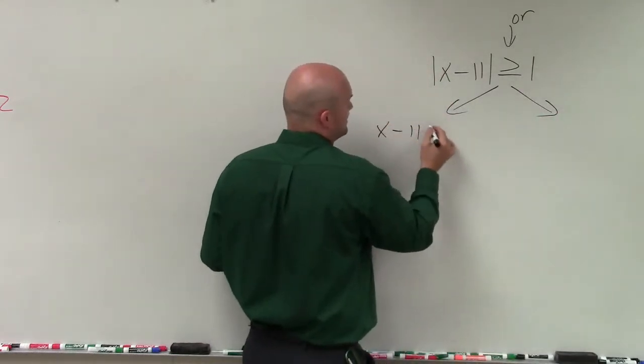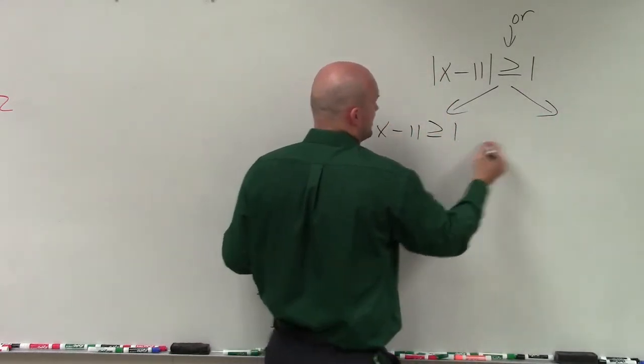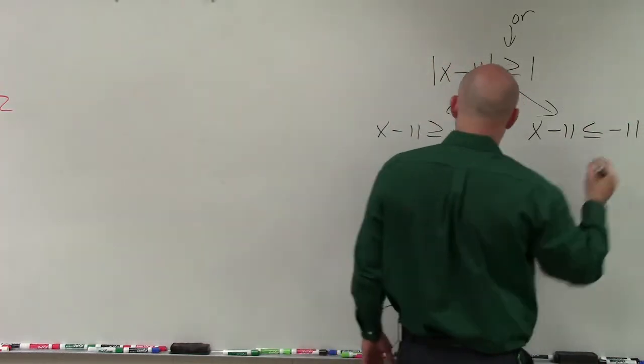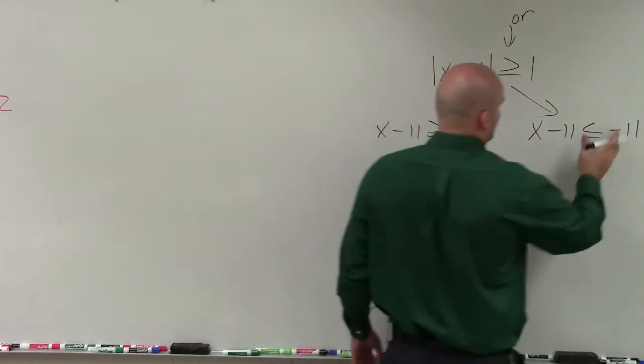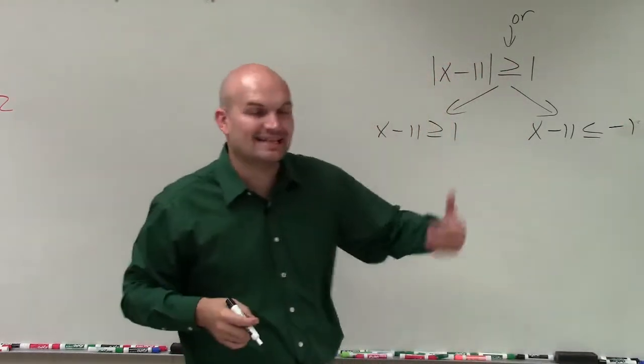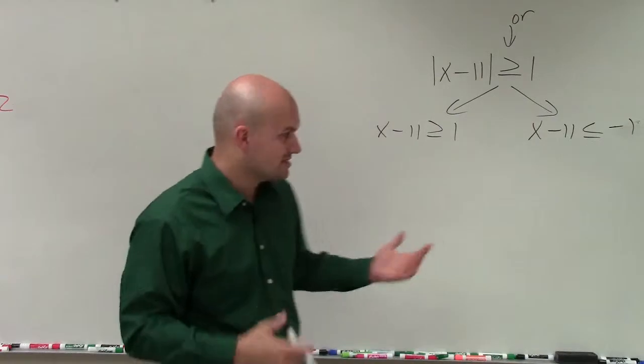So I have x minus 11 is greater than or equal to 1, and x minus 11 is less than or equal to negative 1. Remember, whenever we negate that side, we've got to make sure we flip the inequality symbol.